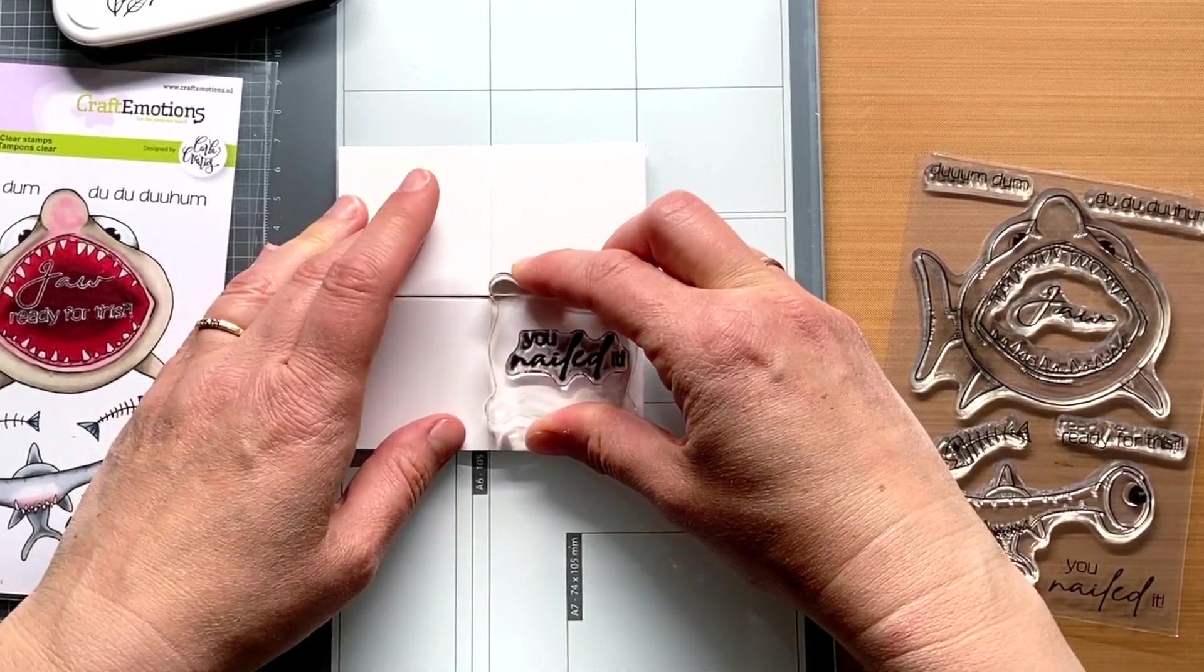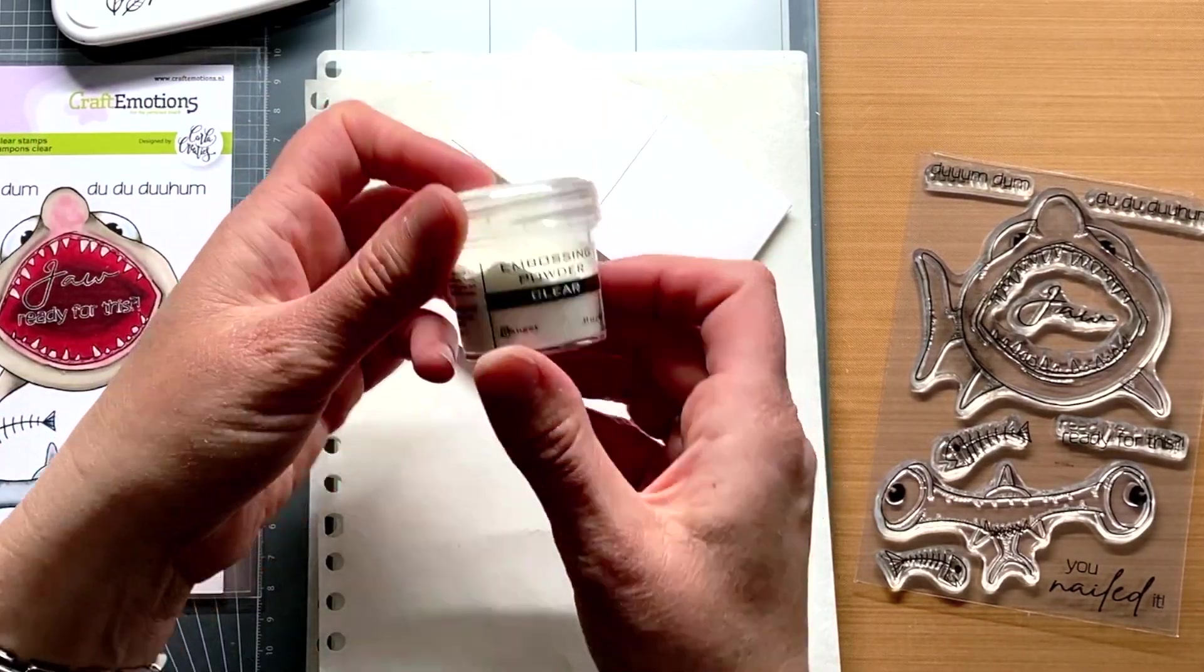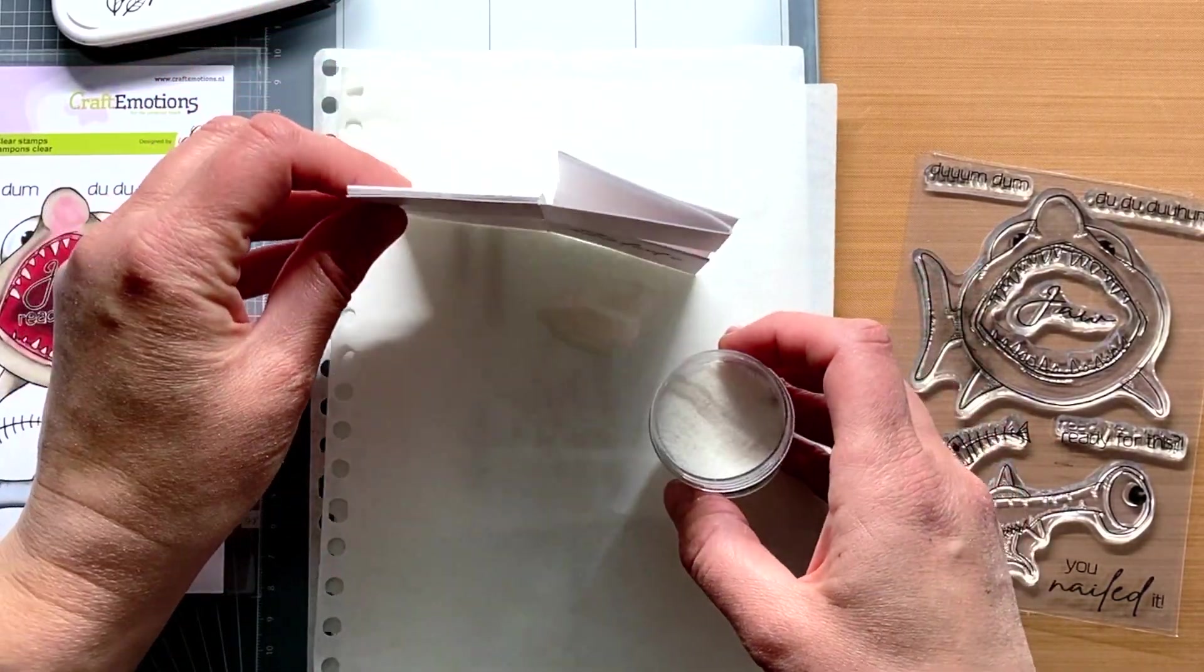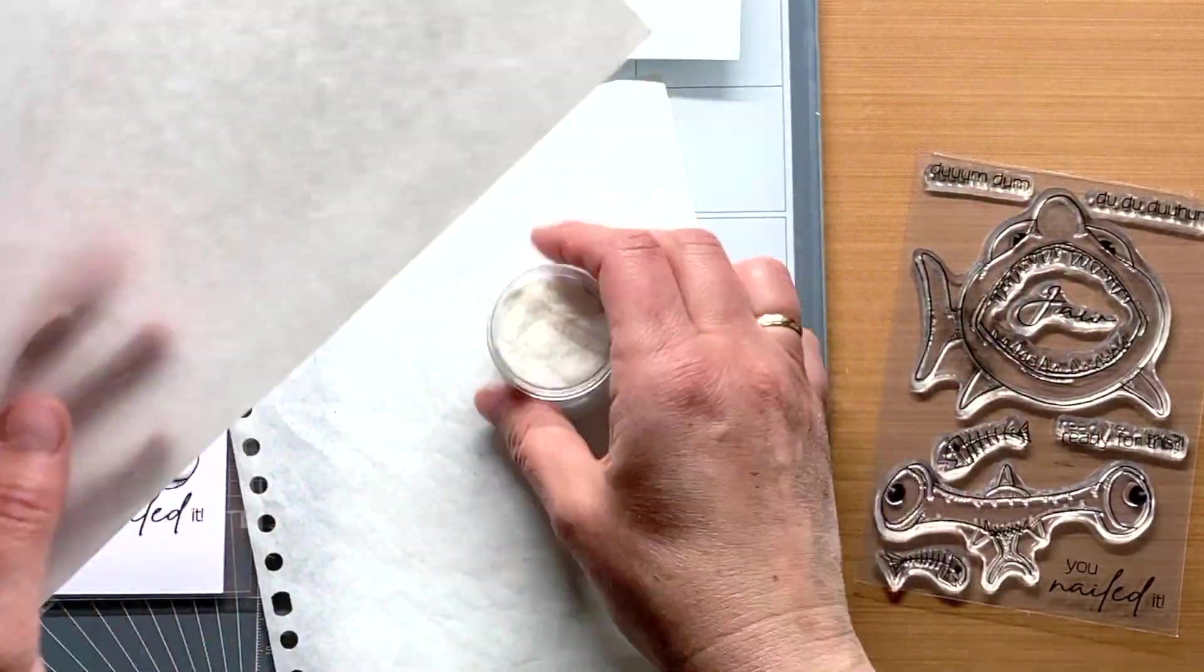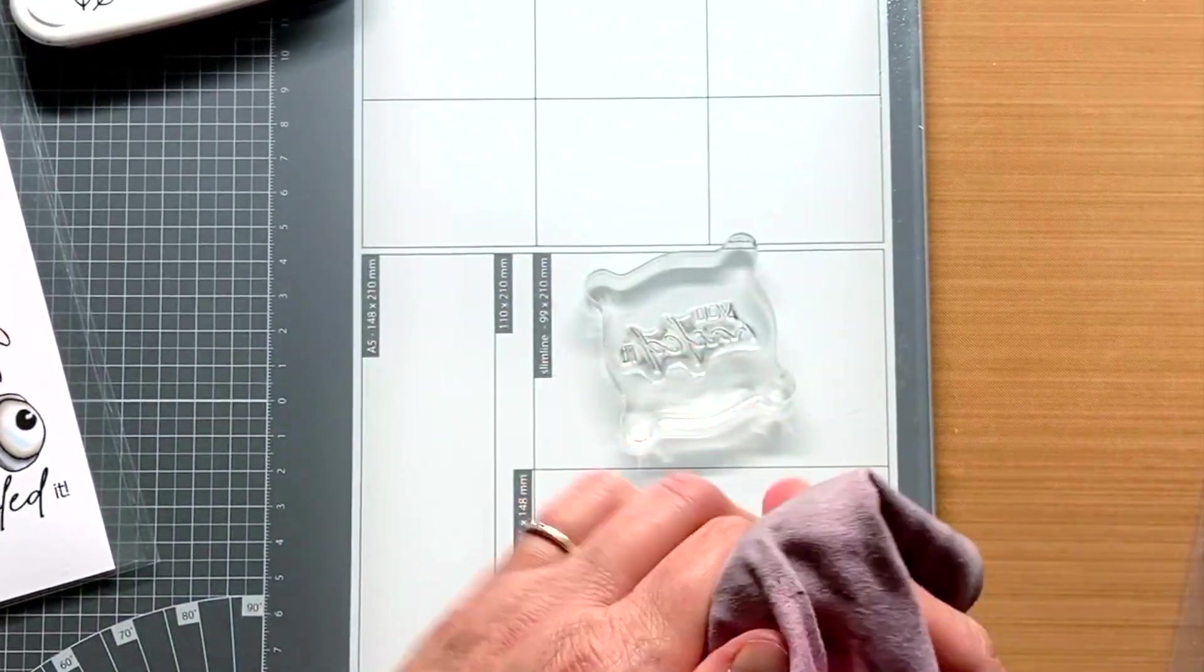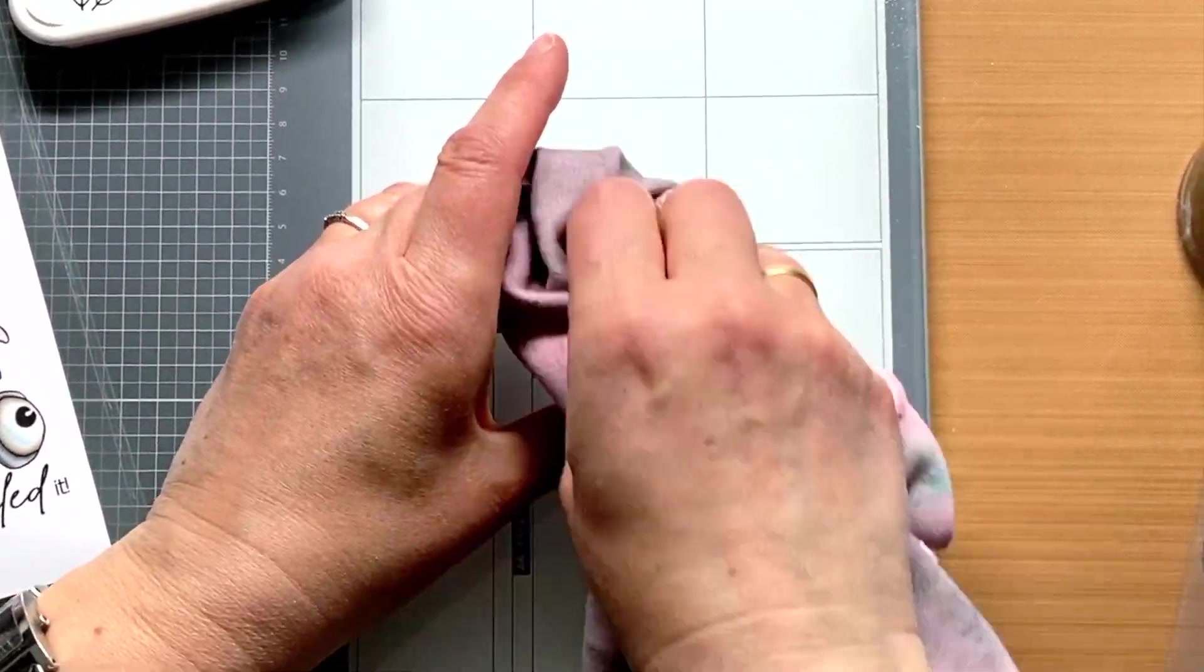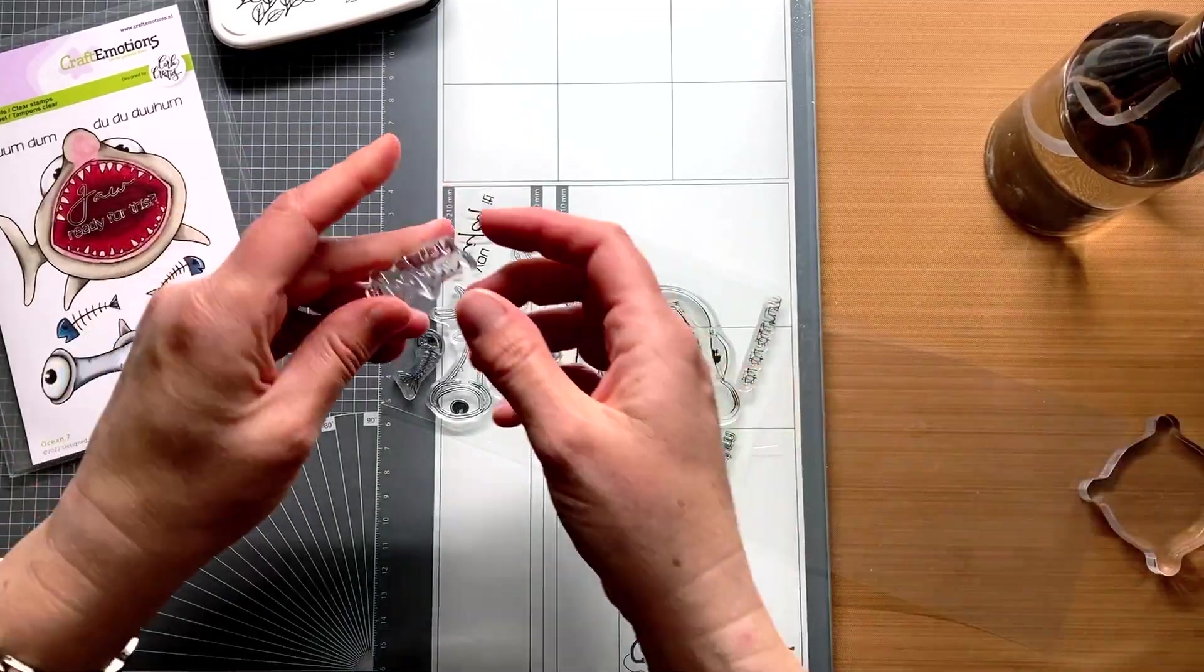I am stamping a little higher than the middle so that I can stick an image under it later. I really like this font that Carla designed. I heat emboss with Ranger clear embossing powder. Under the card I put two sheets of paper to catch the embossing powder. And I clean the stamp with a damp microfiber cloth. I find this works better than baby wipes. With that you sometimes have fibers that stay behind on the stamp, and this is also better for the environment.